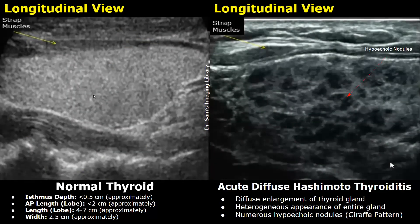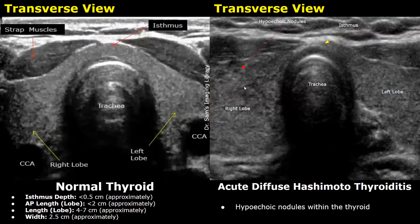This is a thyroid lobe in the longitudinal plane — normally it has a homogeneous hyperechoic appearance. In this case, however, the thyroid lobe has a heterogeneous appearance and is filled with various hypoechoic nodules. The thyroid was enlarged as well, showing a giraffe pattern. This was also a case of acute diffuse Hashimoto thyroiditis, with an enlarged gland and prominent hypoechoic nodules.